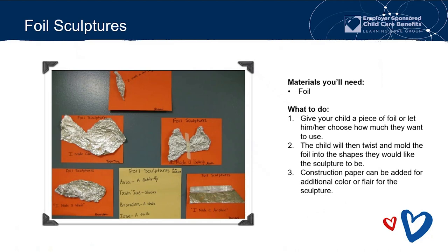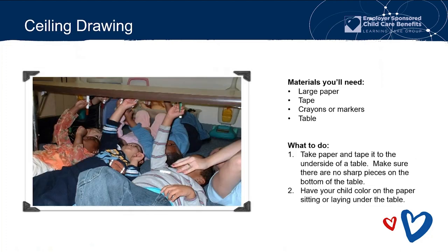Foil sculptures — all you need is just foil. Give your child a piece of foil or let them choose how much they want to use. They will then twist and mold the foil into shapes and different structures. You can always add construction paper to add a little color or flare, and you can ask them what they created and write that on the paper as well.